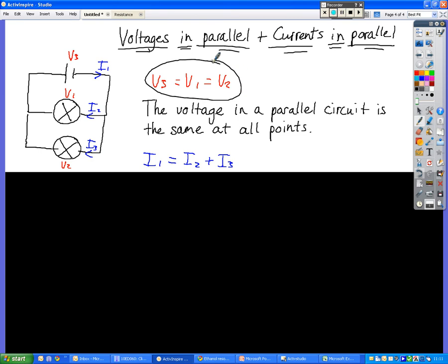So VS = V1 = V2, the voltage is the same at all points. We can verify that by looking at the brightness of the bulbs. The brightness of the bulbs would be the same, so however many of these you connect in there, they will all be the same brightness, indicating that they have the same voltage.